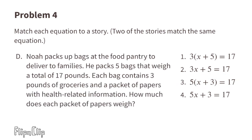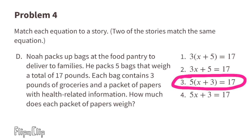Story D: Noah packs five bags at the food pantry, totaling 17 pounds. Each bag contains three pounds of groceries and a packet of papers with health-related information. How much does each packet of papers weigh? Inside each bag is a packet of papers with unknown weight plus three pounds of groceries, and five bags total 17 pounds. Story D matches equation three: 5 times x plus 3 equals 17.